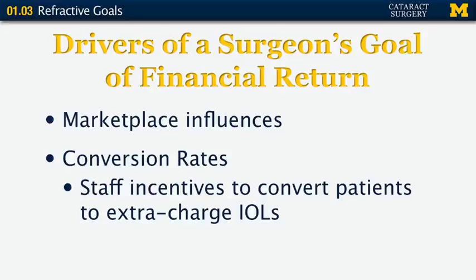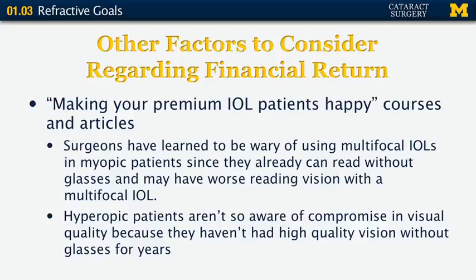There are some drivers to the surgeon's goal of financial return to their practice, and a lot of this comes from the marketplace. We hear the term 'conversion rate' to talk about patients who have come to the office not wanting any particular lens but are converted to wanting a premium or patient-pay lens. Some offices provide incentives to their staff to convert these patients. Surgeons have learned to not put multifocal lenses in myopic patients, because those patients can already read without their glasses, and with the multifocal lens they may actually have worse reading vision than before surgery.